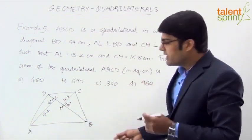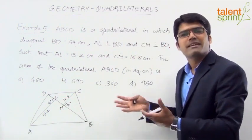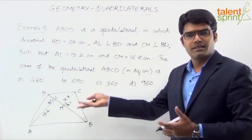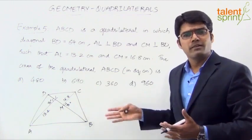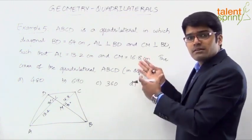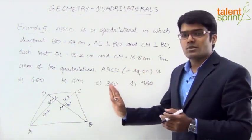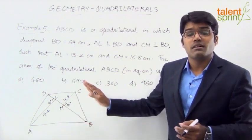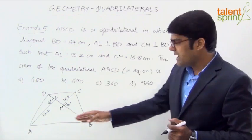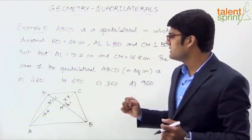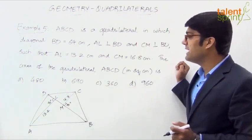Of course visually this looks longer, but since we have taken a random shape you may not find it to be appropriate. But if you draw a proper figure you will find it to be matching with the given length. But that doesn't matter. It's all about the approach being correct. AL is 13.2, CM is 16.8. And now we need to find out the area of the quadrilateral.